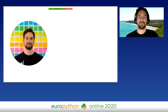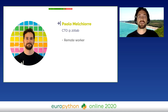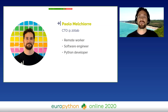I'm Paolo Macchiore and I'm CTO of 20Tab, a Pythonic software company based in Rome, for which I work remotely. I'm a software engineer and a long-time Python developer. After using Django for a few years, I became a contributor to the project.